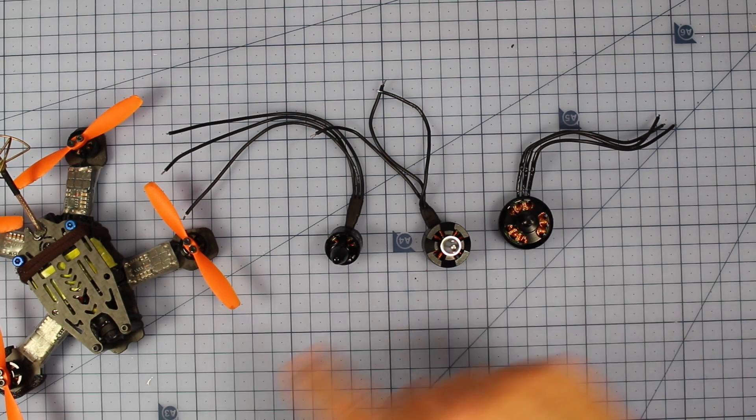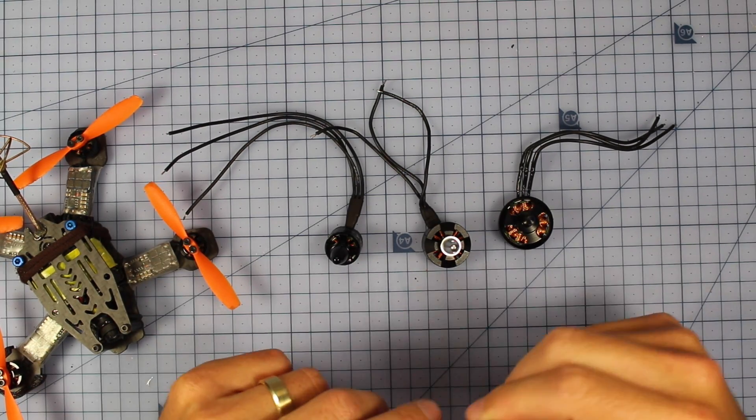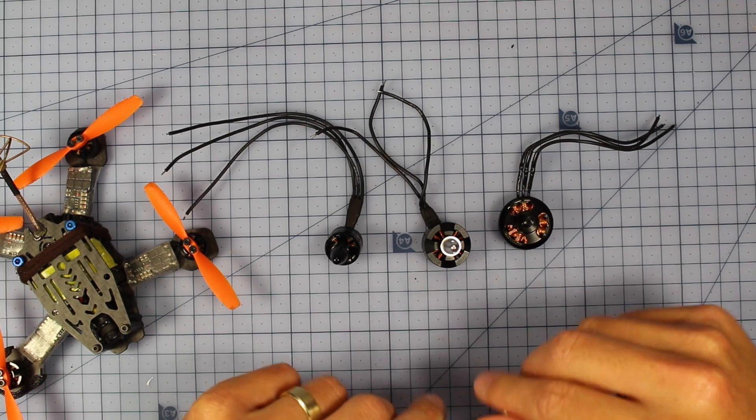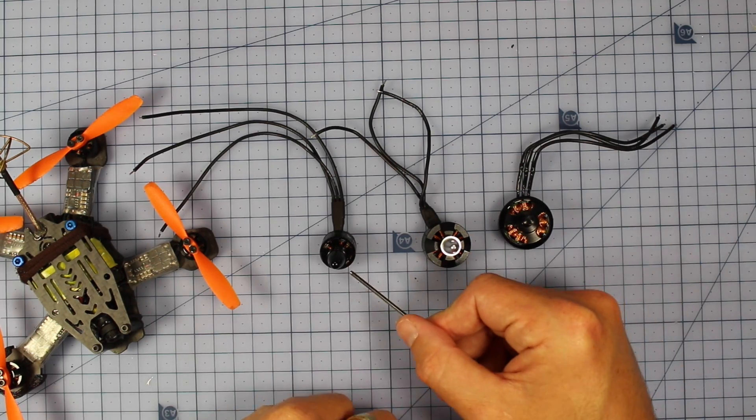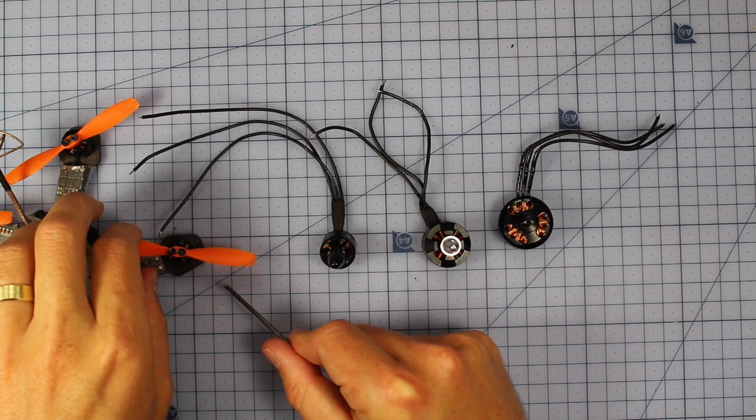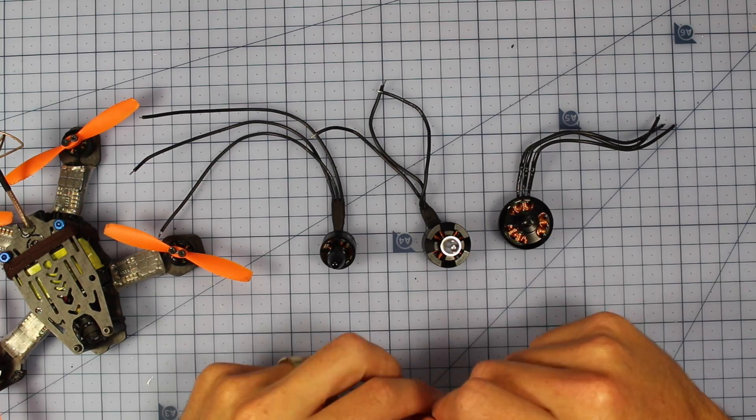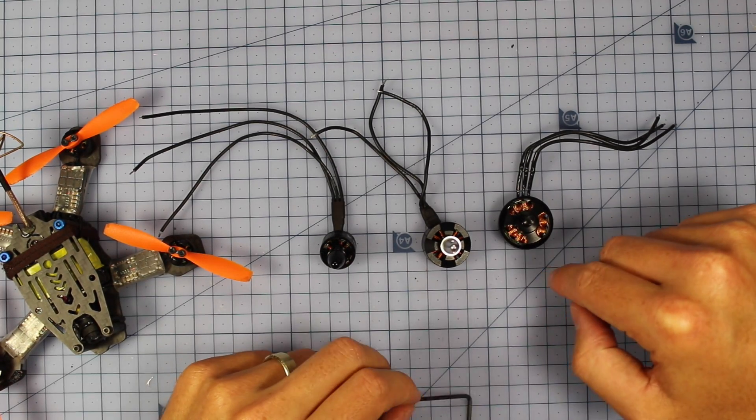I've got a bunch of motors here, and we're going to talk about each one in detail. These are probably the most common sizes out there for mini quads, and they've all got numbers like 2204, 1806, 1306, and 1105.